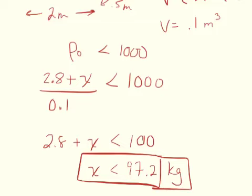The mass was 2.8 and the density became 28 when we checked in the beginning — we were just checking to make sure the initial mass was floating to see that it was lower than 1,000.